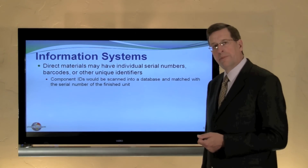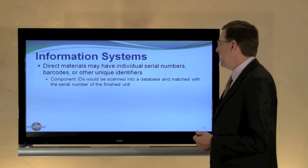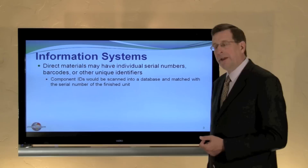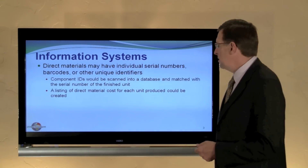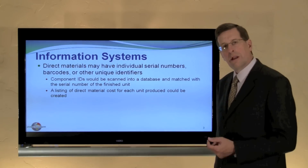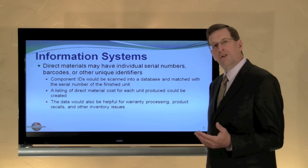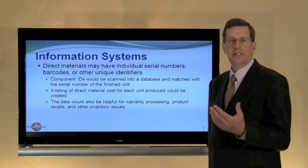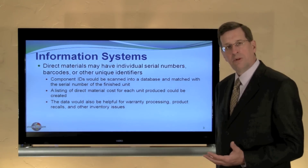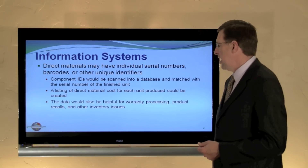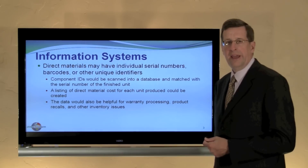Barcodes and serial numbers are easily scanned electronically. The computer can match the component IDs to the finished unit. That's particularly useful for preparing a listing of the cost of materials that went into a particular item — clearly we need it for cost accounting purposes — but we also have the possibility of doing warranty processing. If we guarantee a component for 90 days, the serial number allows us to know when the part was manufactured and how long the customer has had it. It's also helpful for product recalls and all forms of inventory management.